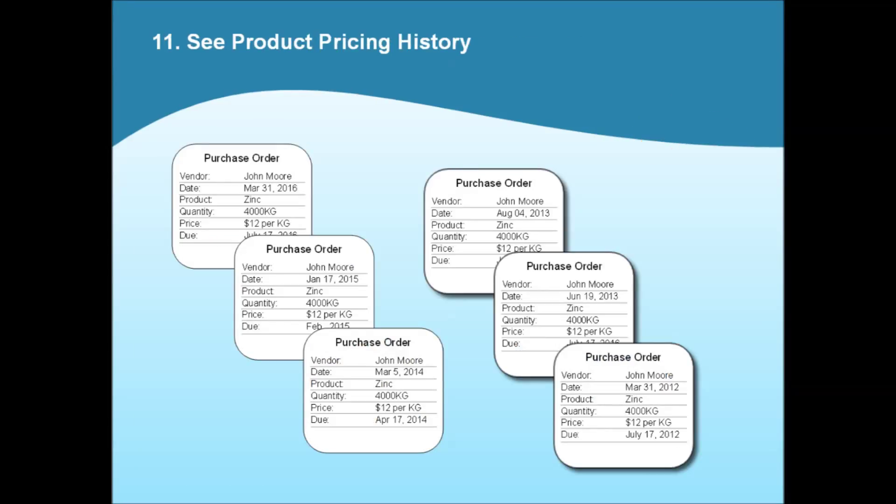A purchase order detail report will give you line-by-line information as to what you bought in any period from a certain brand, supplier, or product line. You will also get the prices that you paid for these items. Lots of valuable information in here can be used to assess which items are becoming prohibitively expensive, or even just to get more visibility on what your inventory is costing you.